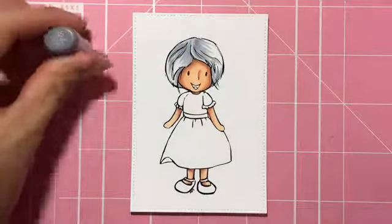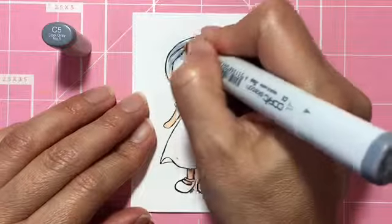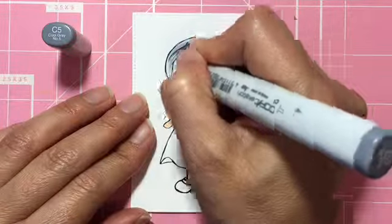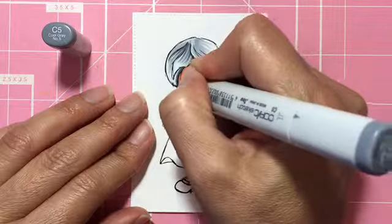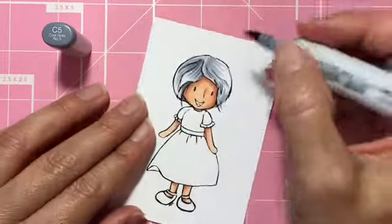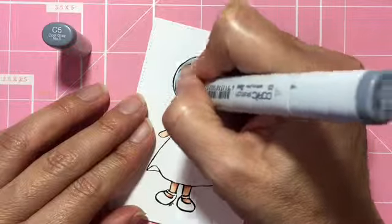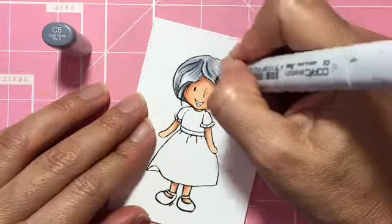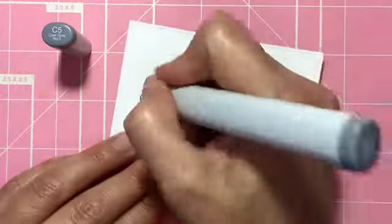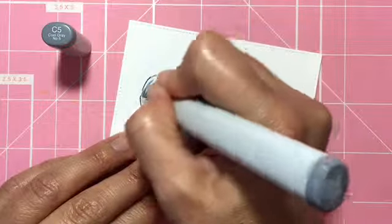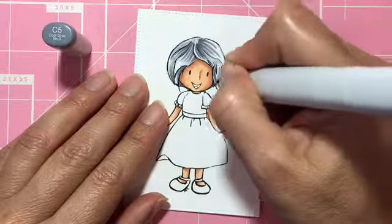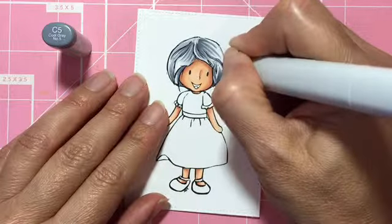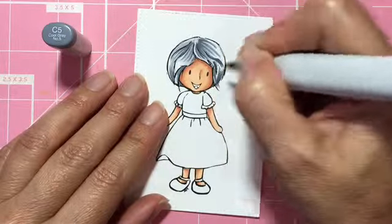Now I'm going with C5 and I'm going again over the areas that I just colored to start seeing how it's looking with a darker tone. I'm just going lightly with it because I don't want to put down too much dark in case I need to fix anything. It's easier to fix lighter colors than darker ones.